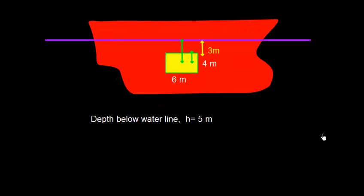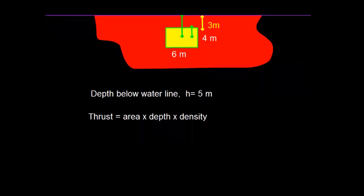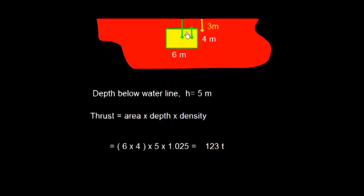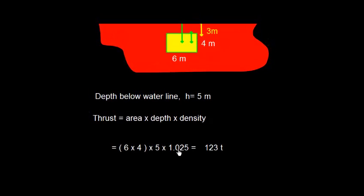Then, it is pretty easy for us to work out the thrust, which is area into depth into density. Let us put the value: area is 6 into 4, that is 24, and the depth is 5. We just now have calculated, and density is 1.025.